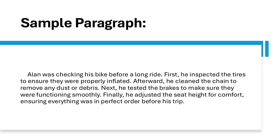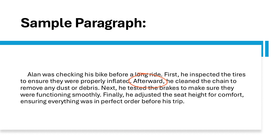This paragraph illustrates the time sequence, or chronological order, pattern by describing a series of actions Alan takes in preparation for his bike ride, with each step occurring in a specific order. The paragraph begins by setting the scene — Alan is checking his bike before a long ride — giving the reader context for the upcoming sequence of events. The body of the paragraph follows a clear time sequence: first, Alan inspects the tires to ensure they are properly inflated; afterward, he cleans the chain to remove dust or debris; next, he tests the brakes to make sure they are functioning smoothly; finally, he adjusts the seat height for comfort.